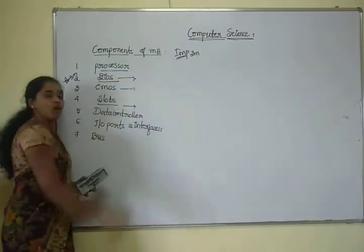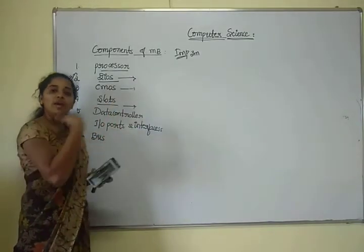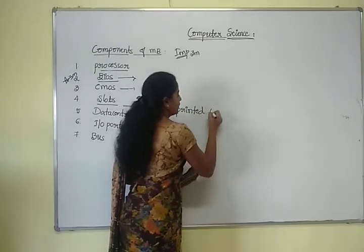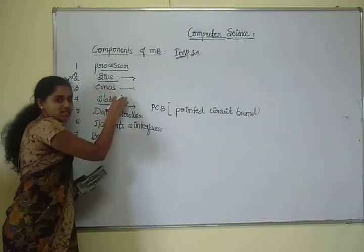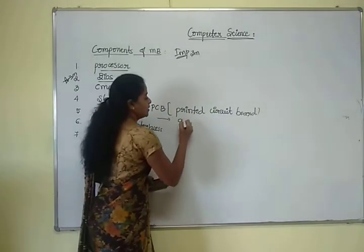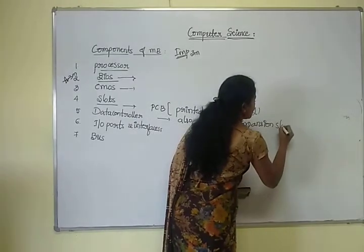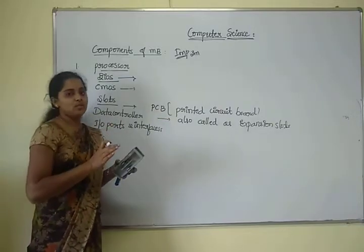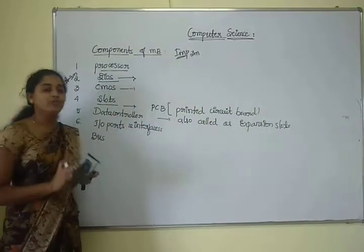The next component is a slot. A slot is referred to as an opening space in a computer where you can insert a PCB. This slot is also called an expansion slot, because it allows us to expand the capabilities of our computer system. There are different types of slots.